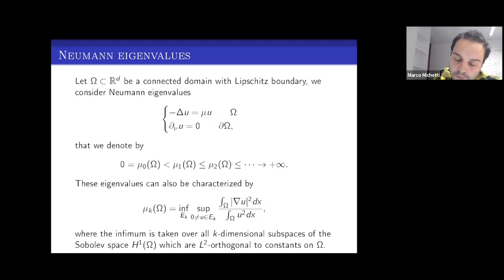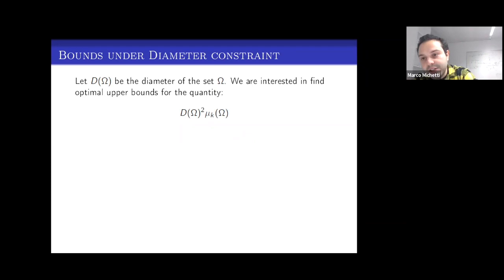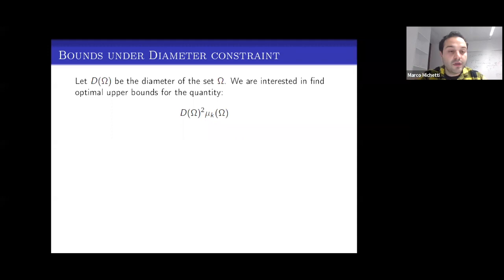The main topic of this talk is the following. I will denote by d(omega) the diameter of the set, and we are interested in finding optimal upper bounds for d(omega)^2 times the Neumann eigenvalues — or equivalently, thanks to the scaling property of the Neumann eigenvalue, we are fixing the diameter of a domain and asking for optimal upper bounds for the Neumann eigenvalues.